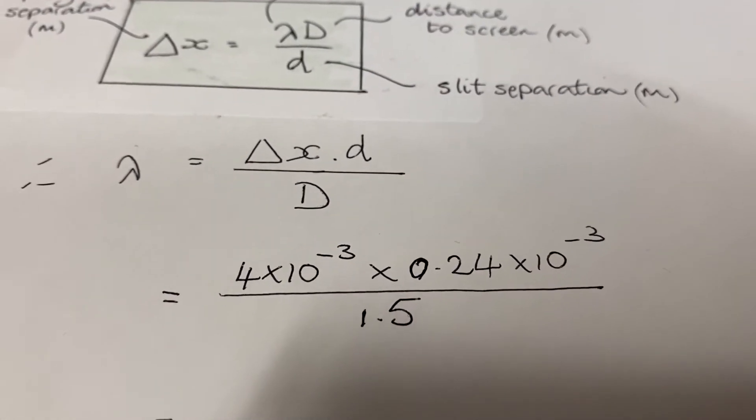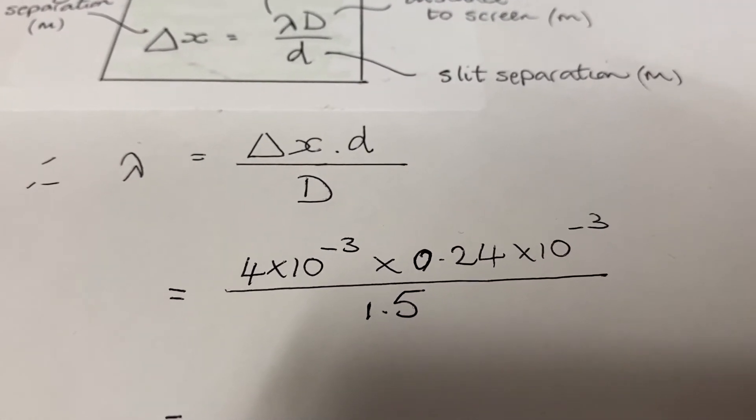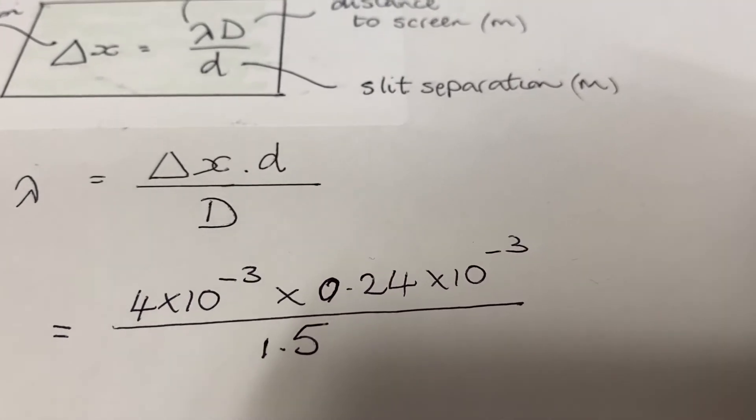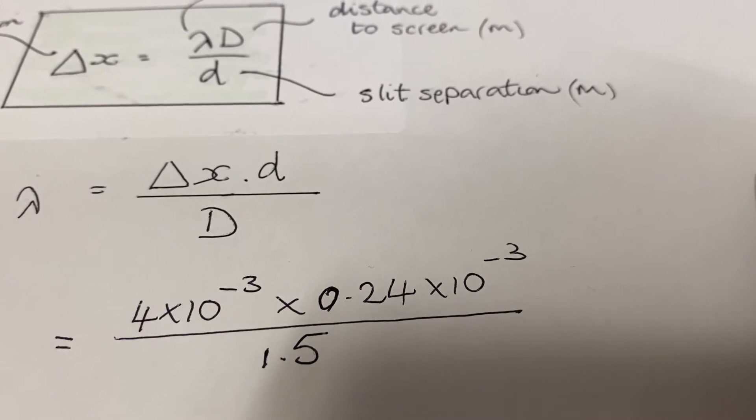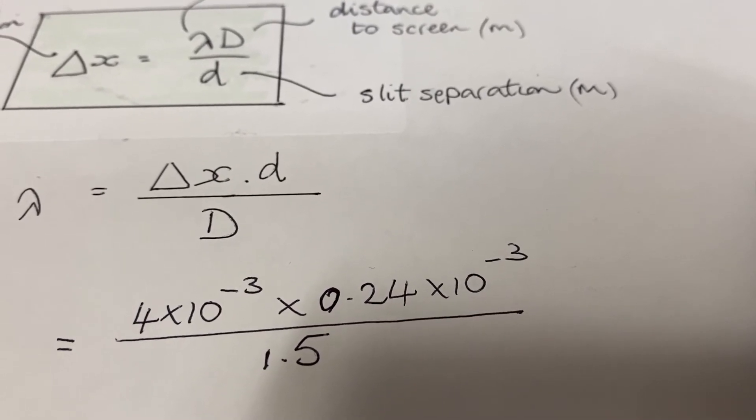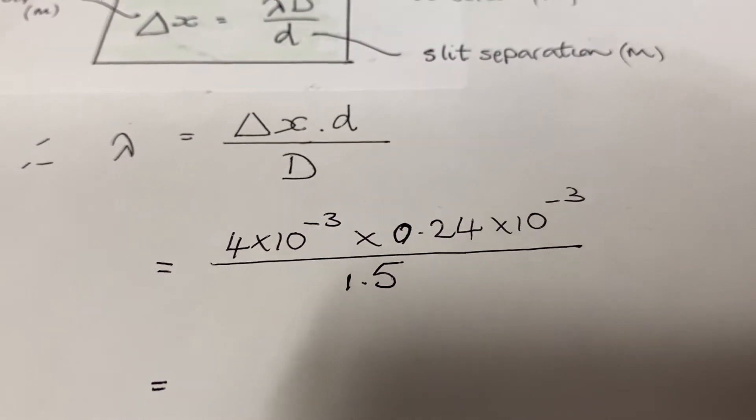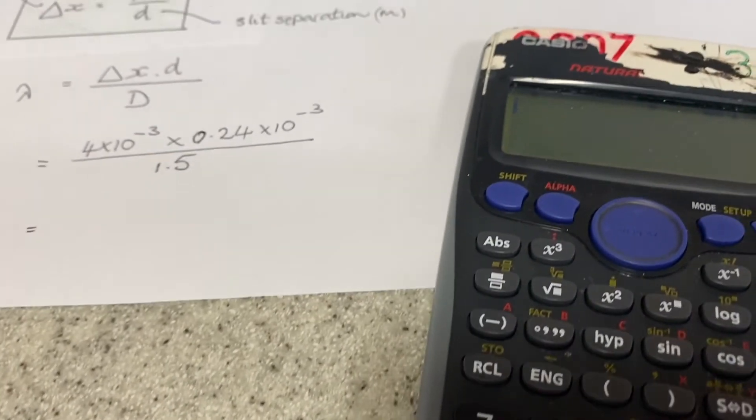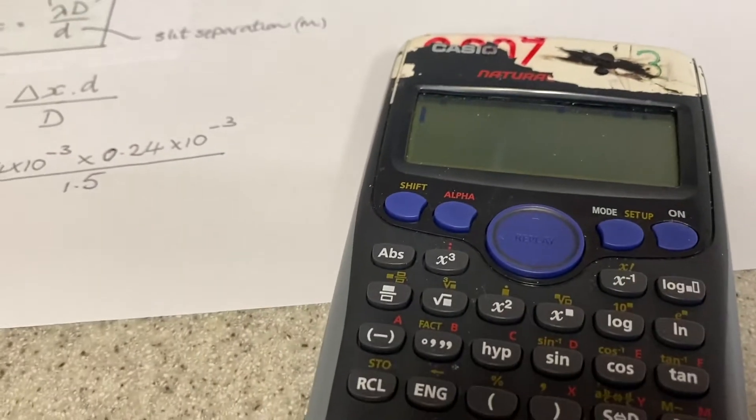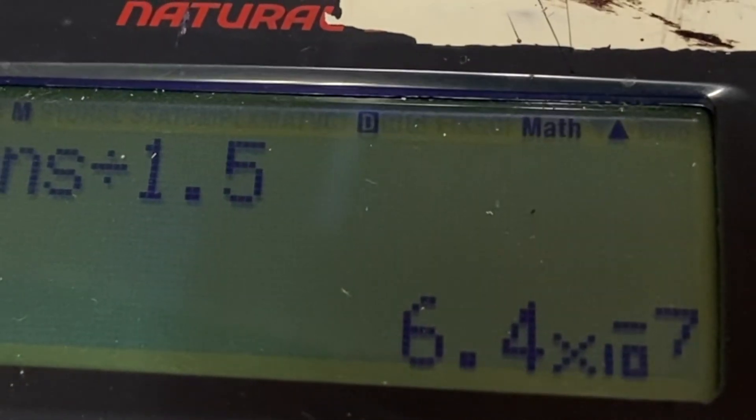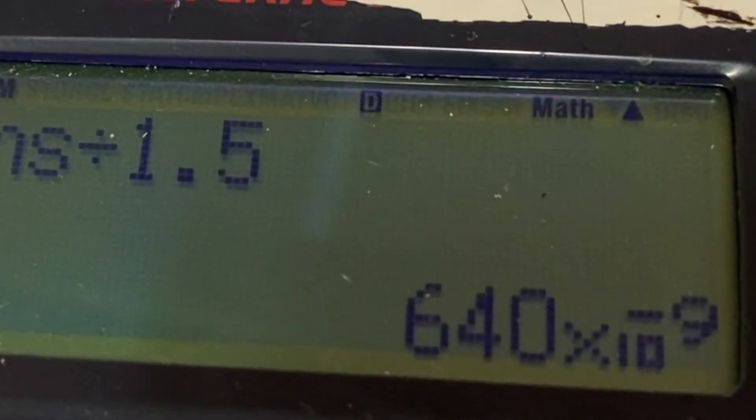Okay, that's all my numbers in the equation. The fringe spacing was 4 times 10 to the minus 3 meters. The distance between the slits: 0.24 times 10 to the minus 3 meters. The distance to the screen was 1.5 meters. If I do all that on a calculator, we get 6.4 times 10 to the minus 7 meters—640 nanometers.